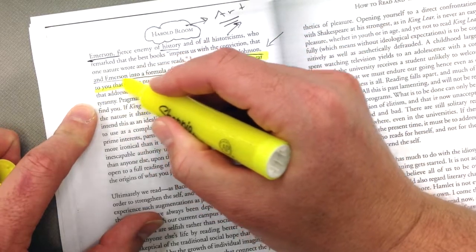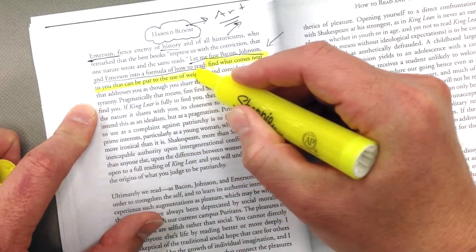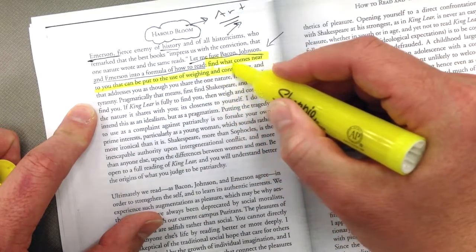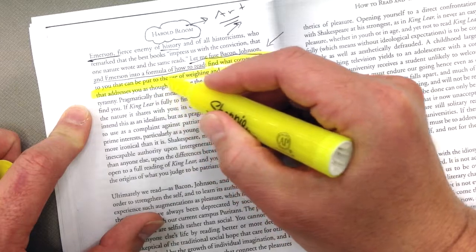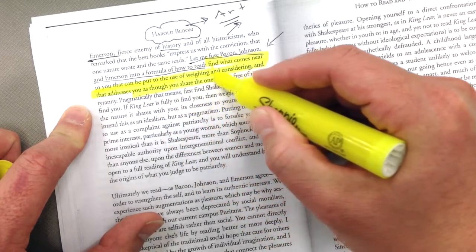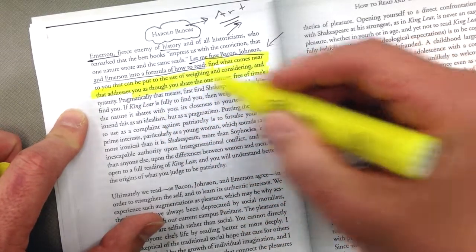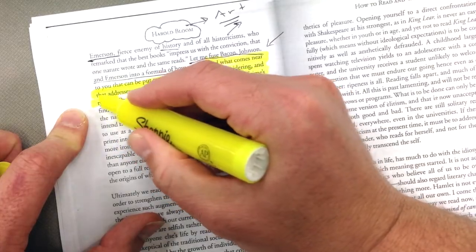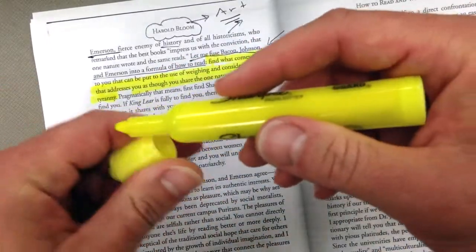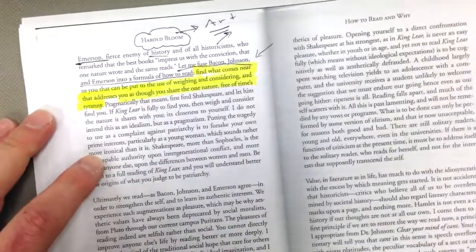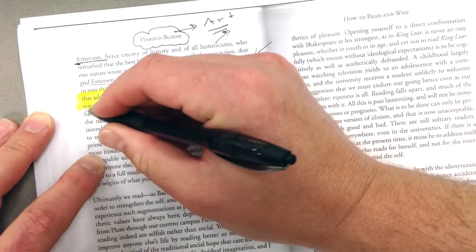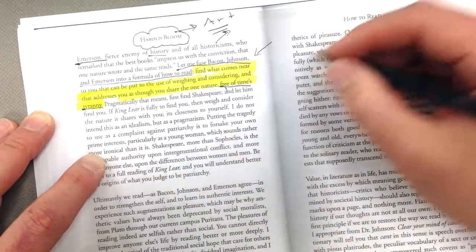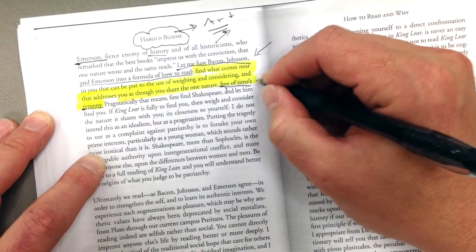Find what comes near to you that can be put to the use of weighing and considering. And that addresses you as though you share one nature, free of time's tyranny. And if you notice this idea of something being free of time's tyranny, this is what Bloom added. Free of time's tyranny.